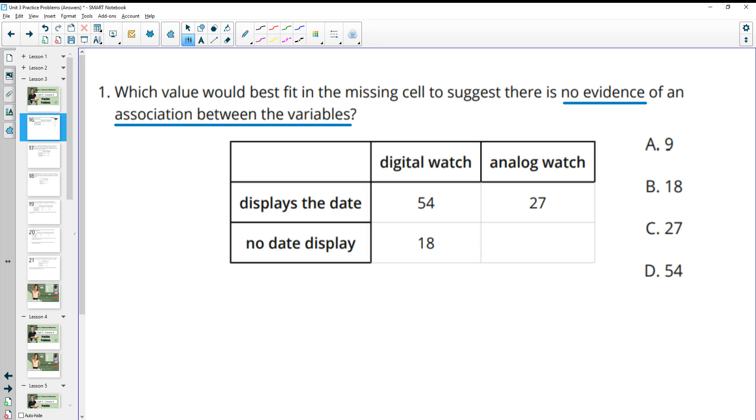Number one says, which value would best fit in the missing cell to suggest there is no evidence of an association between the variables? So when we look at whether there's evidence, when we're going to display the date on digital or analog versus no date on digital or analog, I look this way.